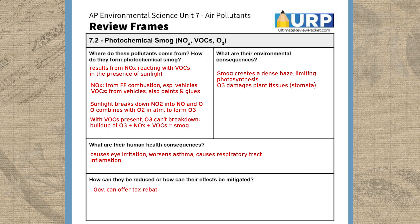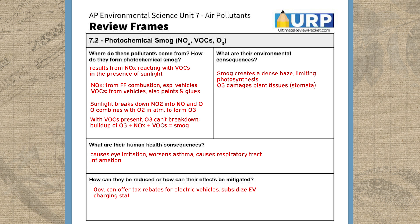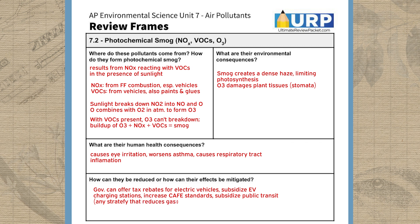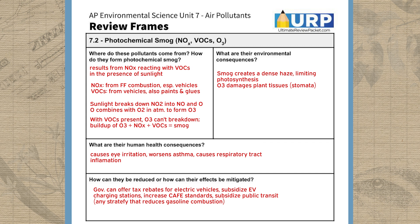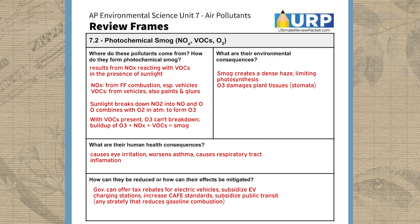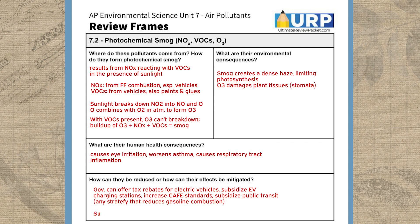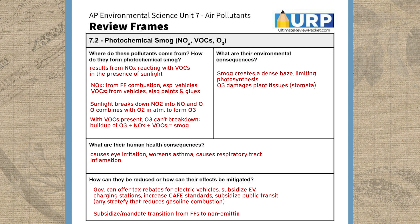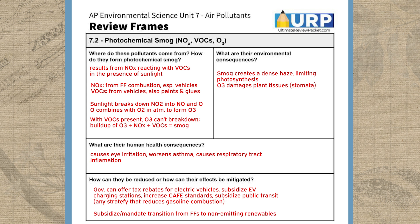If you're a government organization, you could incentivize citizens to switch to electric vehicles with a tax rebate or by subsidizing charging stations that lower the cost of owning an electric vehicle. Or you could increase the fuel efficiency of cars via the corporate average fuel economy standards. You could also subsidize public transportation, leading to more total routes and lower fares for riders. Basically, any strategy that decreases the amount of gasoline being burned for transportation purposes will help reduce photochemical smog. Subsidizing or mandating that utilities produce a certain percentage of their electricity through renewable sources like wind or solar that don't emit NOx or VOX would also help.